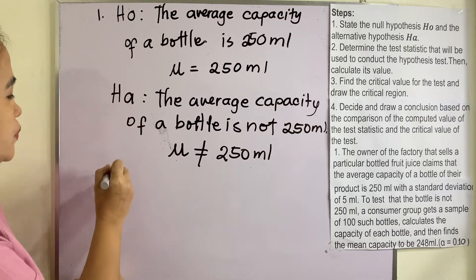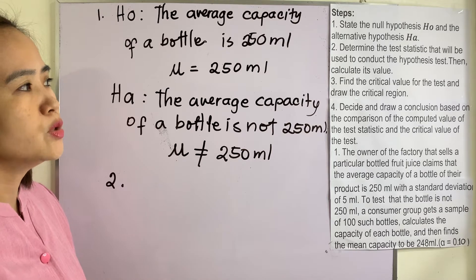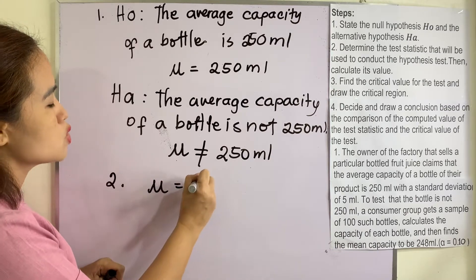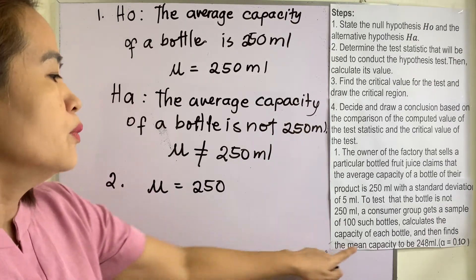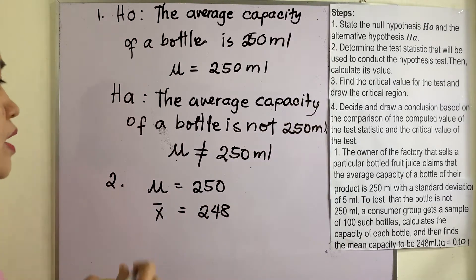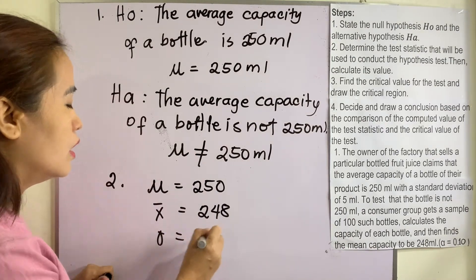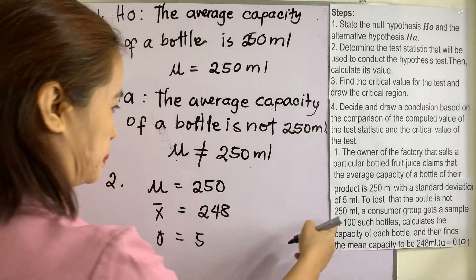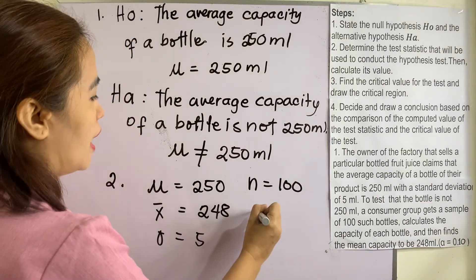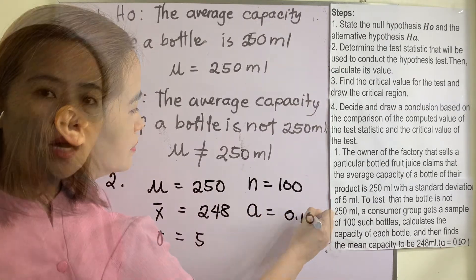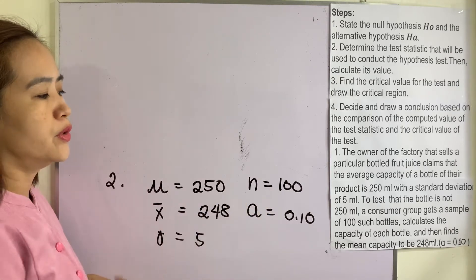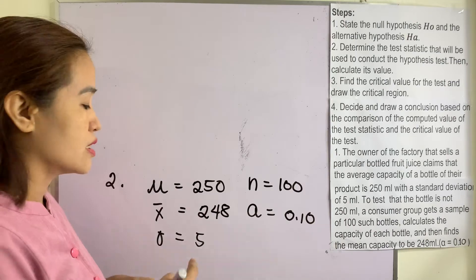Let us go now to number two: determine the test statistic that will be used to conduct the hypothesis test, then calculate its value. Let us identify the given: mu equals 250 ml (population mean), sample mean is 248 ml, standard deviation of the population is 5, number of samples is 100, and level of significance is 0.10. We will be using the Z test because our n is greater than or equal to 30 and the population standard deviation is given, which is 5.